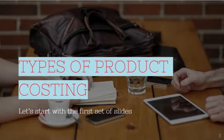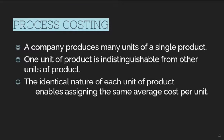What are the types of product costing? First, we have process costing. A company produces many units of a single product, and one unit of product is indistinguishable from other units. The identical nature of each unit enables assigning the same average cost per unit.